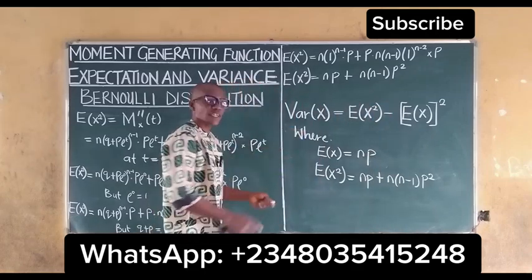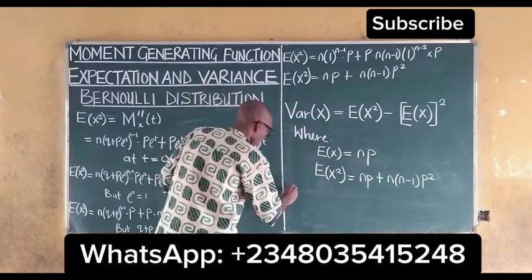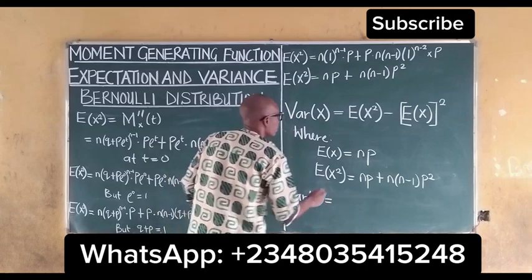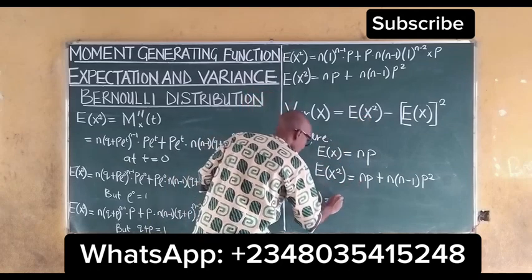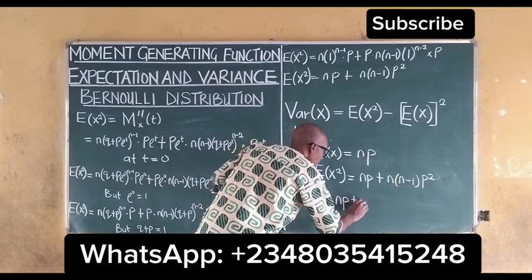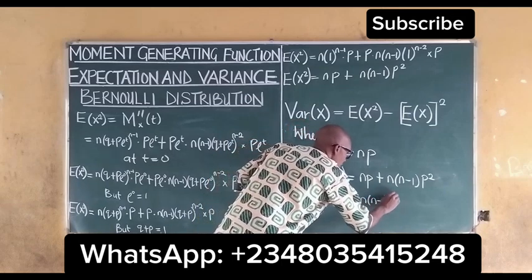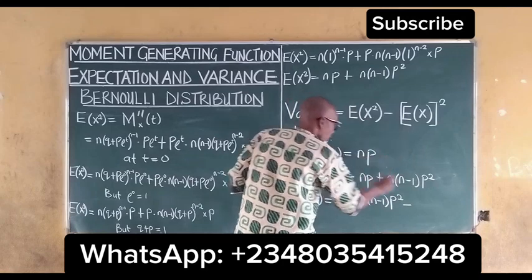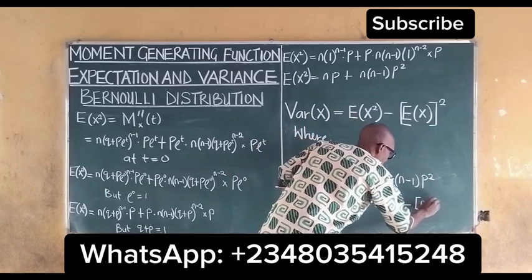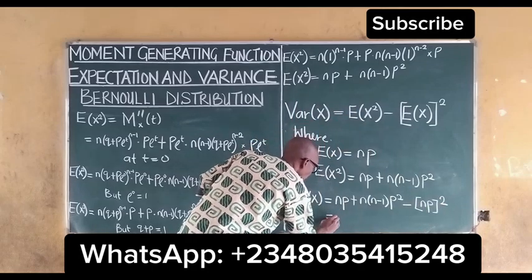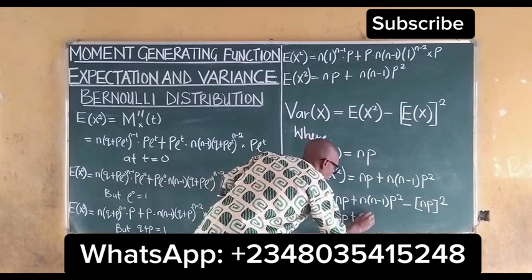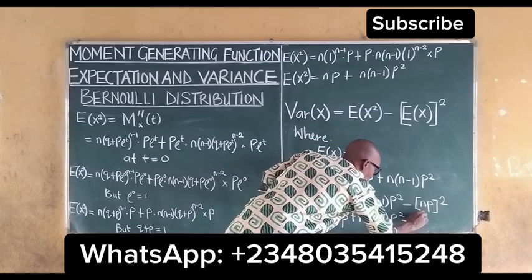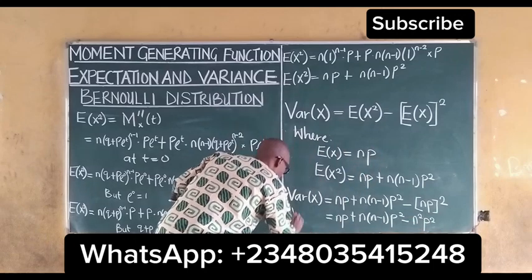Substituting into the variance formula, our variance of x equals the expected value of x squared, which is np plus n(n−1)p², minus the expected value of x squared, which is (np)². Expanding, we have np plus n(n−1)p² minus n²p².